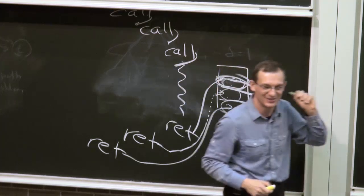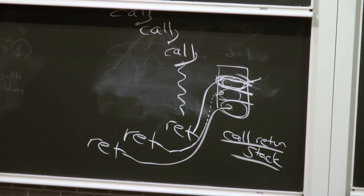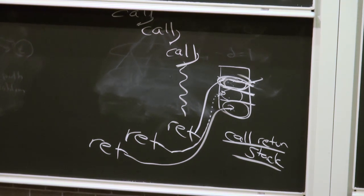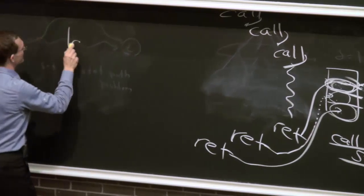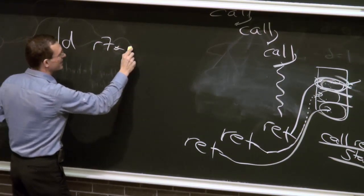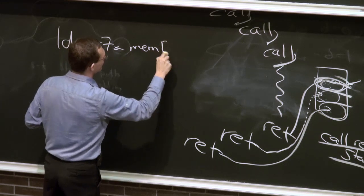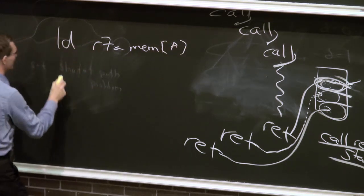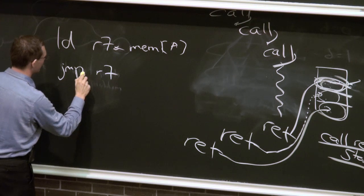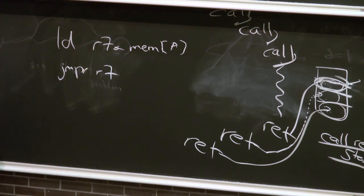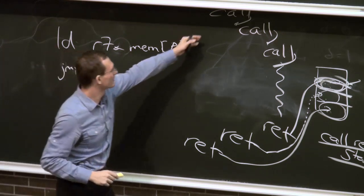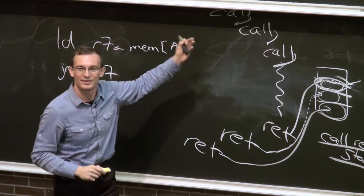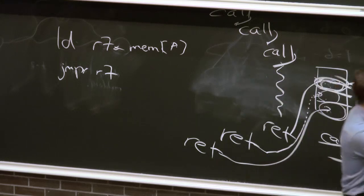That's why returns are different from indirect branches. An indirect branch could be something like load R7 from some memory address, then jump R7 — here you have no clue from the program what the target is. That's why indirect branches are much harder to handle.